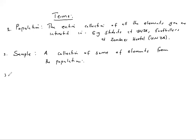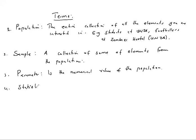The third term is parameter. When you make a numerical decision about the population, you are using a parameter — it is the numerical value of the population. And then when you pick a sample and make a numerical decision for the sample before going to the population, that decision is called a statistic — the numerical value of the sample.